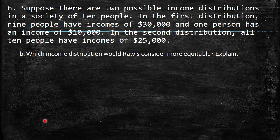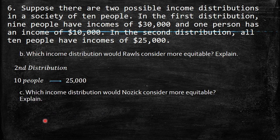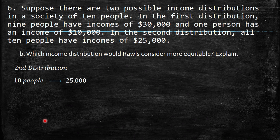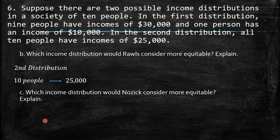Part B: Which income distribution would Rawls consider more equitable? Remember, Rawls wanted to improve the situation of the worst-off person. The second distribution provides an improvement for the poorest individual, even though some people who previously had $30,000 now have less.